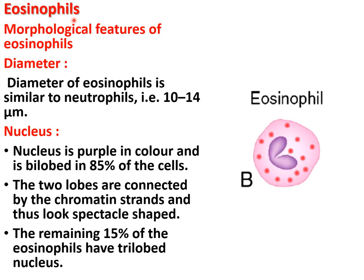The next cell is eosinophil. The diameter of the eosinophil is similar to the neutrophil, about 10 to 14 micrometers. The nucleus is purple in color and mostly bilobed — about 85% of the cells have a bilobed nucleus. The lobes are connected by chromatin strands and they look spectacle-shaped. The remaining 15% of eosinophils have a trilobed nucleus.